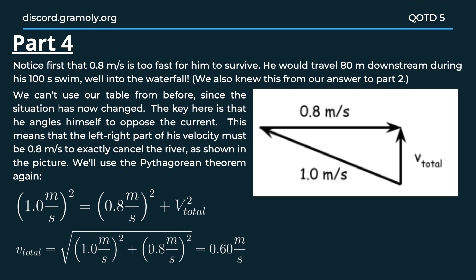Hence the net velocity would be across the current. If we use similar vector properties and the Pythagorean theorem, we know that the square of the magnitude of the net velocity plus the square of the magnitude of the velocity of the current equals the square of the magnitude of the velocity of the swimmer.